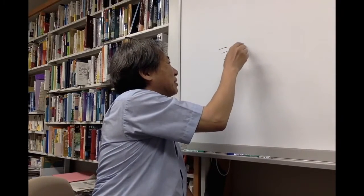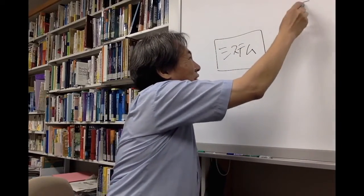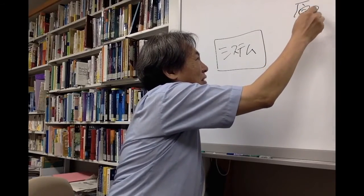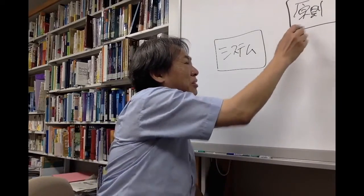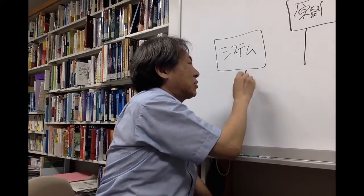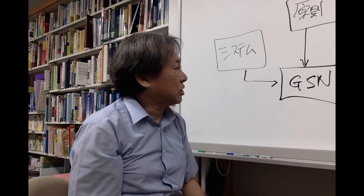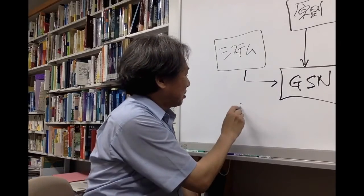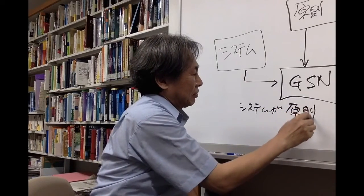In order to achieve accountability, there needs to be a way to explain the conformance — that a system is developed following a certain principle or a norm. And this is where GSN plays its role. GSN is one approach to achieve accountability, to explain that a system conforms to a principle.